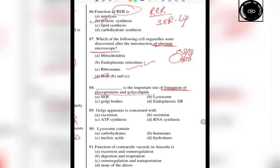The next question is: which is the important site for the formation of glycoproteins and glycolipids? This is directly from the last line of the Golgi apparatus section in NCERT. The answer is Golgi bodies, which is the main site for glycoprotein and glycolipid formation — a process also called glycosylation.